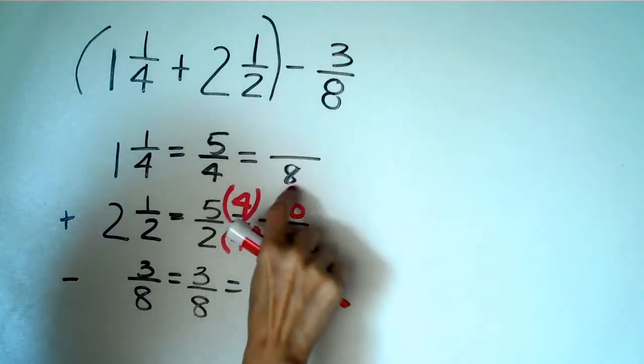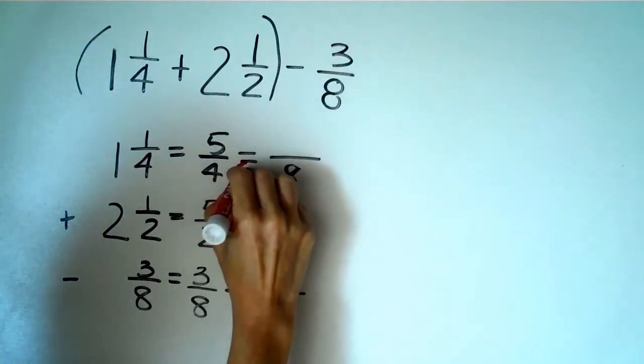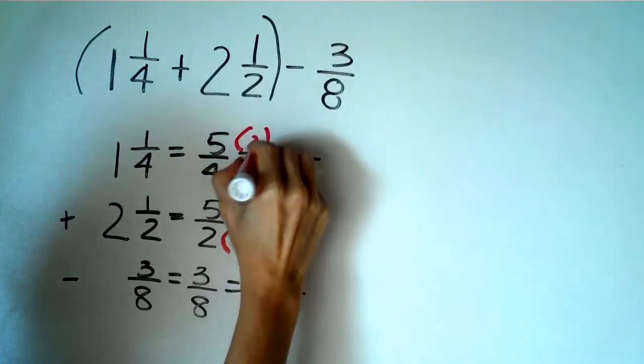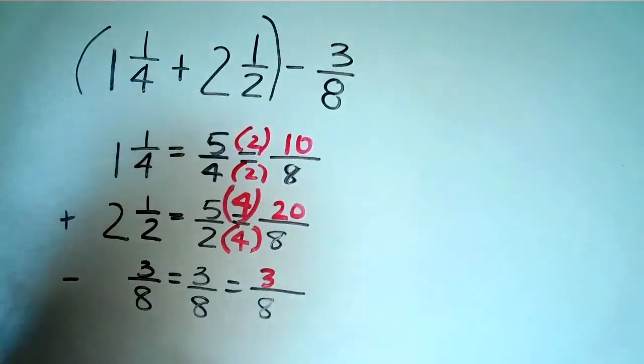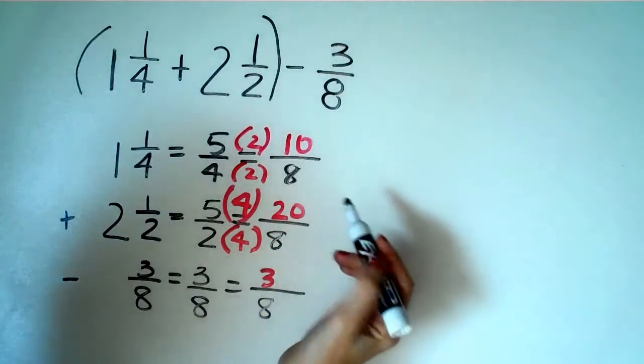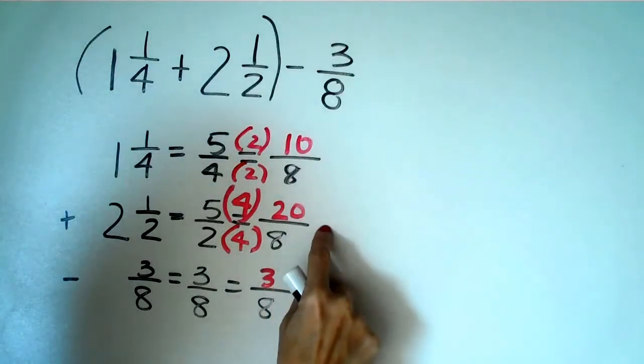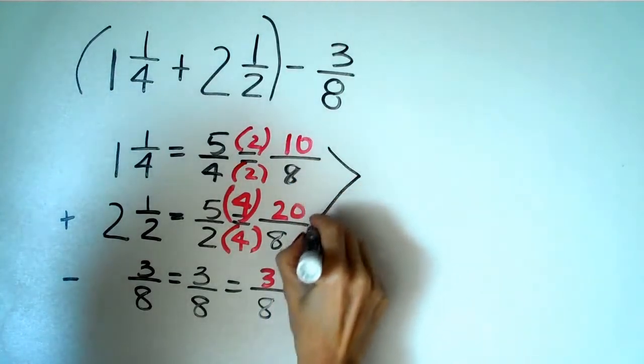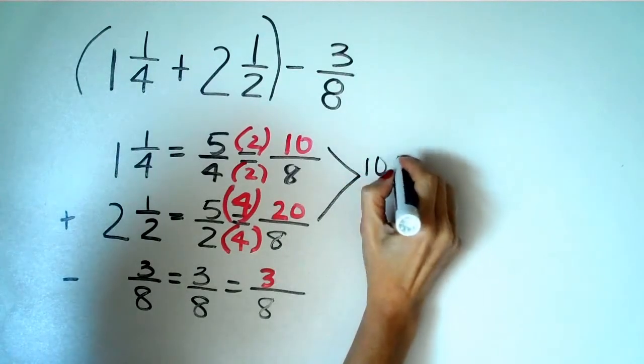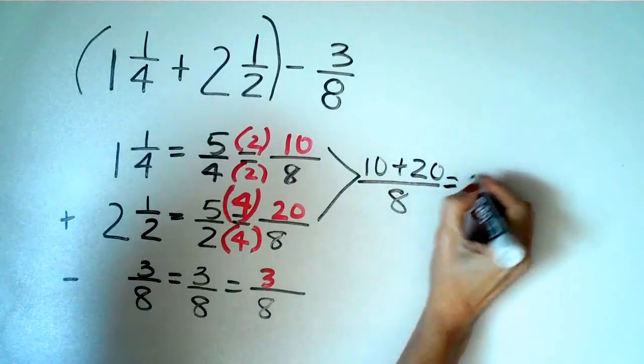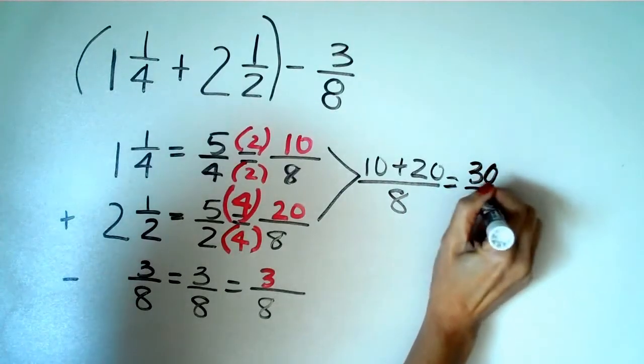And then to go from four to eight is multiplying by two, right? So four times two is eight. Five times two is ten. So now let's remember what we had to do. We had to take care of the first two fractions first. So the first two fractions here are these two. And it is ten plus twenty over eight, which is equal to thirty over eight.